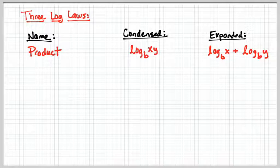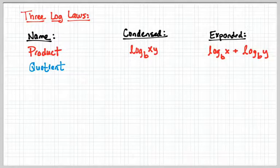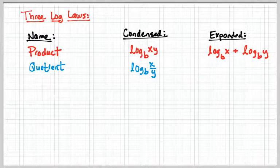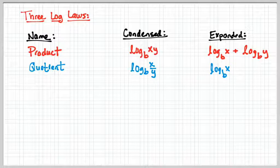Now let's move to 100. What was the name of the second property? It's another word for division, starts with a Q. Quotient. The condensed form is log base b of x divided by y. And the expanded form is log base b of x minus log base b of y.